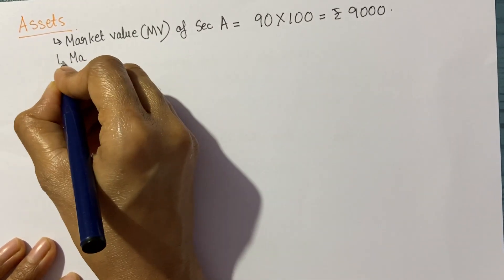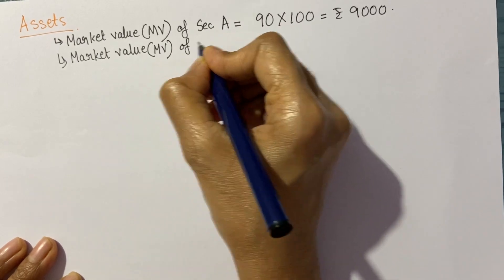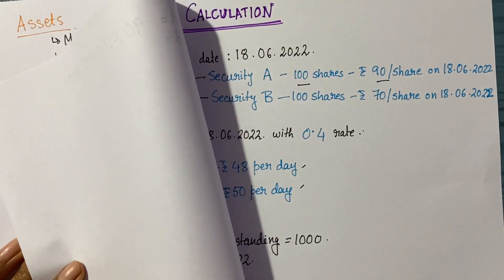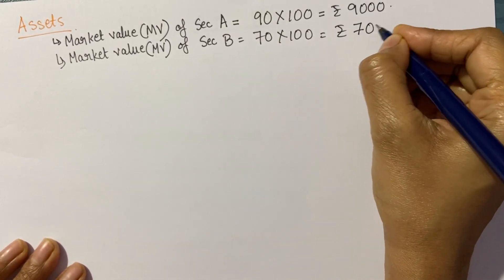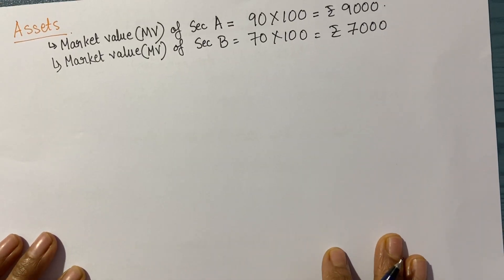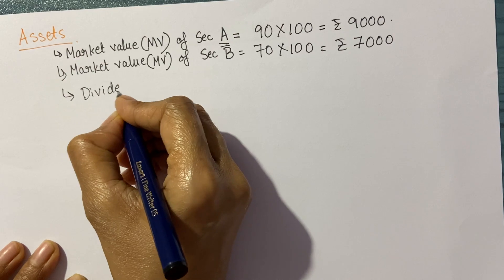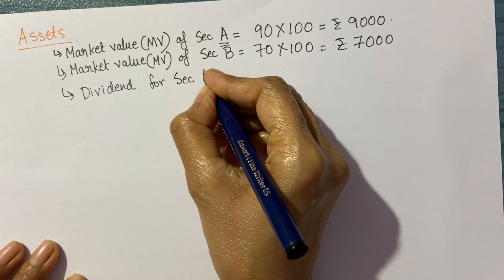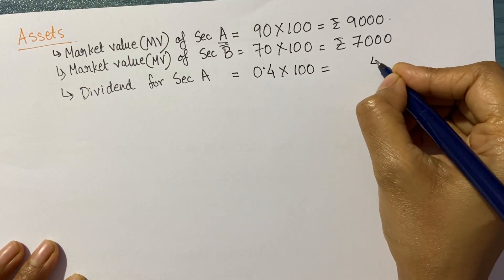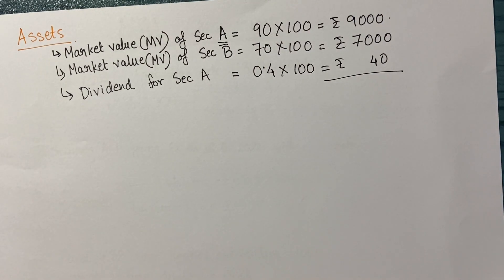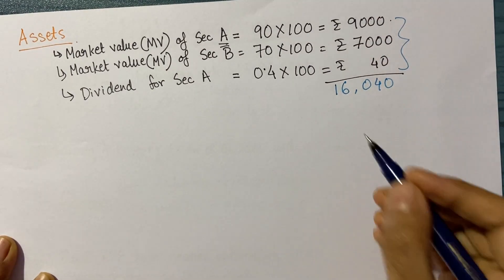equals 9,000. Similarly, the market value of security B is 70 rupees times 100, which equals 7,000. Next, I mentioned that security A is going ex-dividend. So the dividend for security A is 0.4 times 100 shares, which equals 40 rupees. So my total assets for this fund will be 16,040—the total of these three. This is my asset.